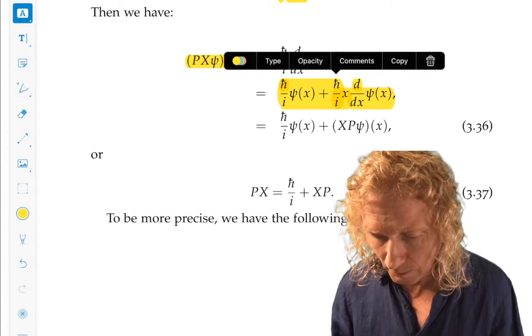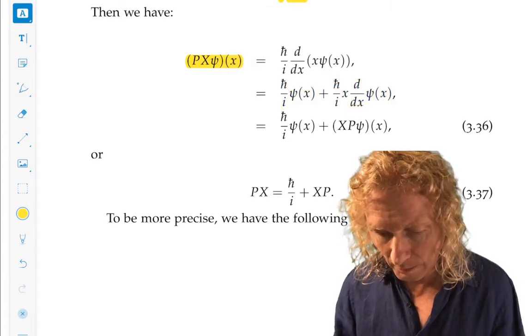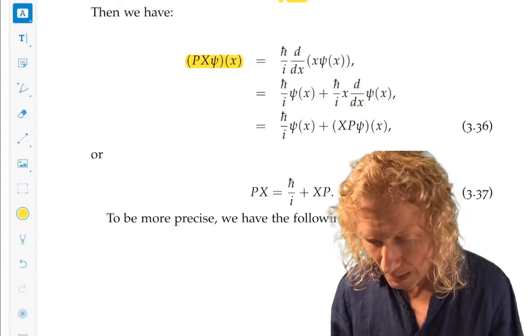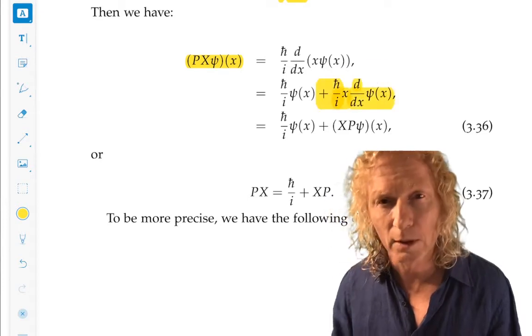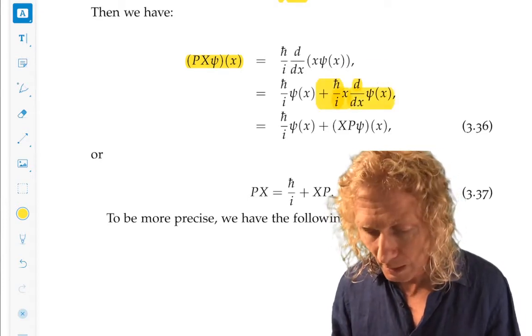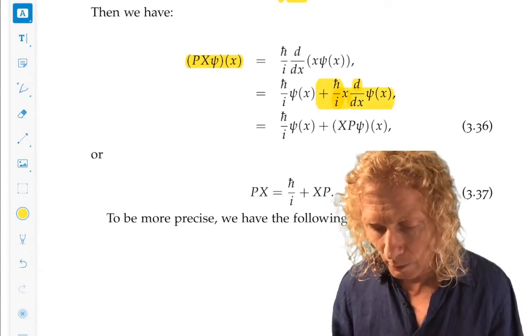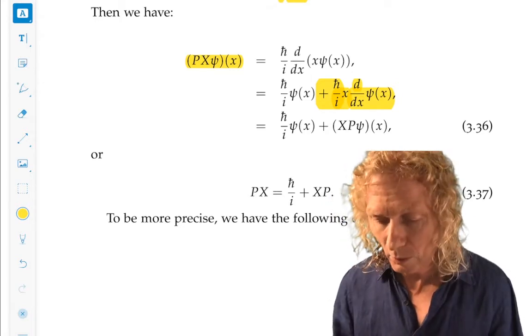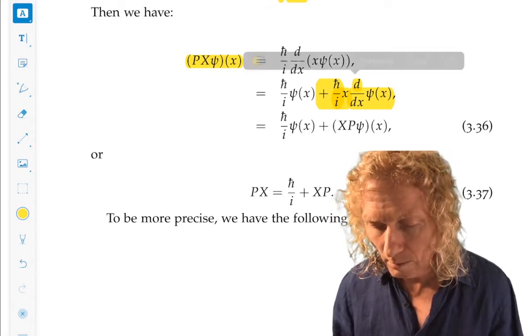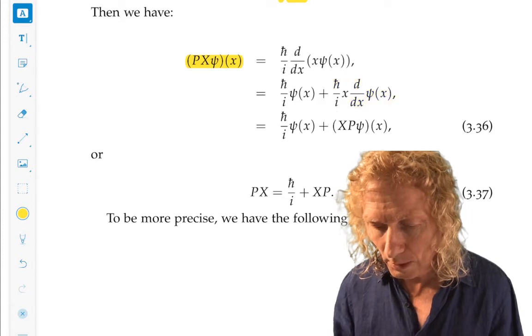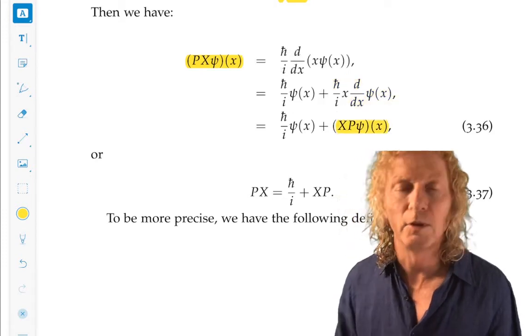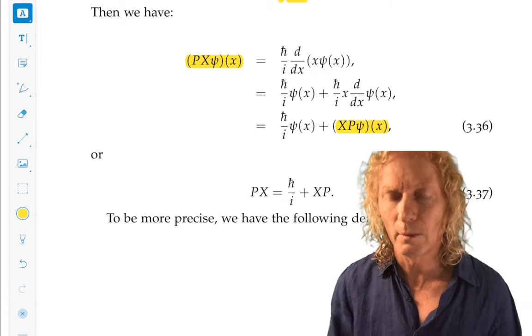That is h bar over i, psi of x plus, and now we make the identification for the operators here. Operator X, operator P, psi of x. Understanding how you go from here to here is important. Should be easy for you now, I hope.